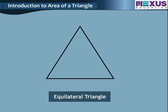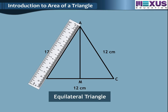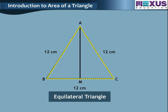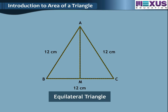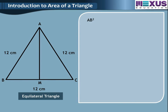Next, we will calculate the area of an equilateral triangle. Given triangle ABC, M is the midpoint, and sides have length 12 cm. Find the area of triangle ABC. We have to find the height using Pythagoras theorem. AB square is equal to AM square plus BM square. So 12 square equals AM square plus 6 square, since BM equals MC. Now 144 equals AM square plus 36.